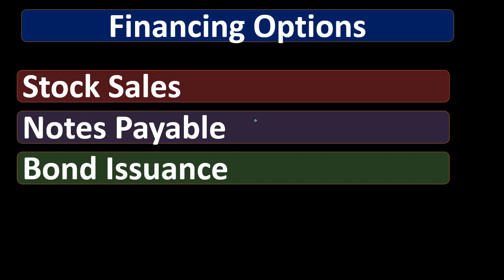Then we have notes payable — the option available even to a sole proprietorship or partnership. The major type of note is a loan from the bank, which any business can try to obtain to finance operations. The con is that we're going to have interest on it, though the interest is deductible. The major benefit of a loan is that we don't give up equity interest in the business — no voting rights, no future revenue sharing — but we do take on the obligation of repayment.